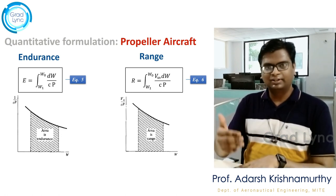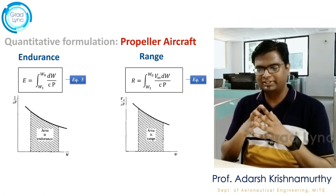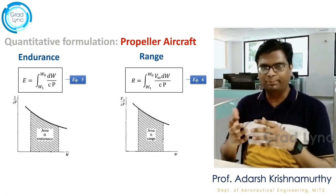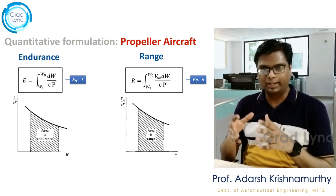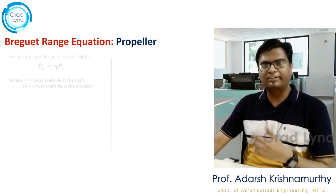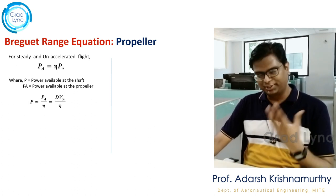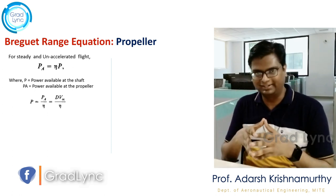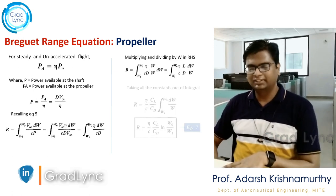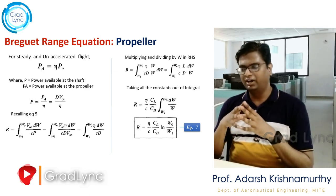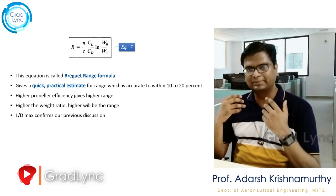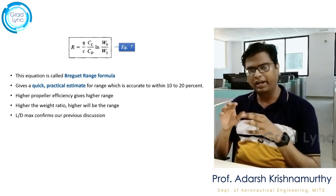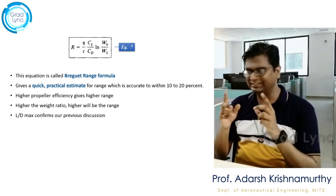If I draw a curve whose y-axis is 1/(c·P), the area under the curve gives the endurance for propeller aircraft. Similarly, if the y-axis is V∞/(c·P), the area under the curve gives the range for propeller aircraft. Then we defined propeller efficiency, which relates the shaft power available to the power actually transmitted to the propeller blades. We then derived the Breguet range equation, which tells us that for a propeller aircraft, maximum range is achieved when the aircraft flies at (CL/CD)max.